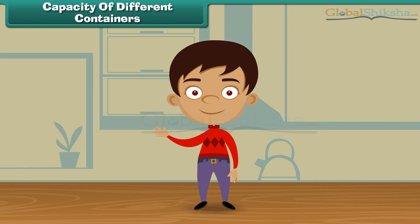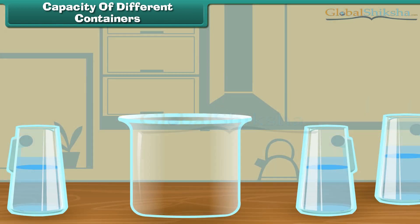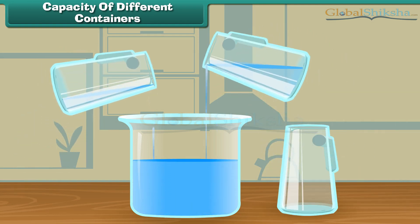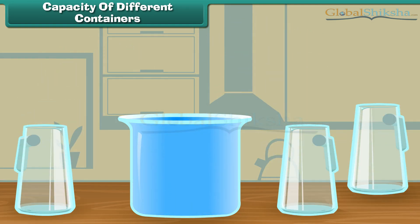Let us do another activity. We have three different vessels and a jug. Here we will fill water from the jug into these three vessels. Let us start with the first vessel. One, two, and three. Here we see that three jugs of water fill the first vessel.